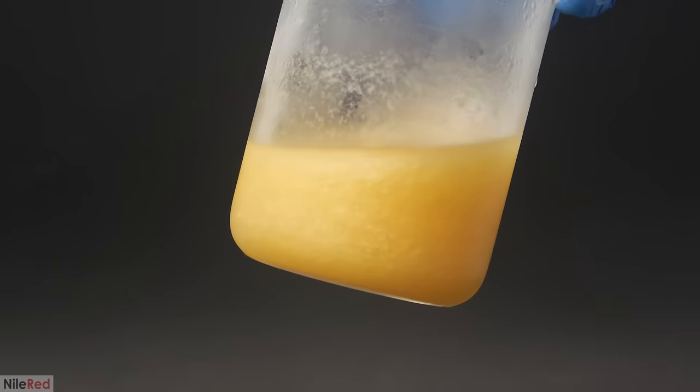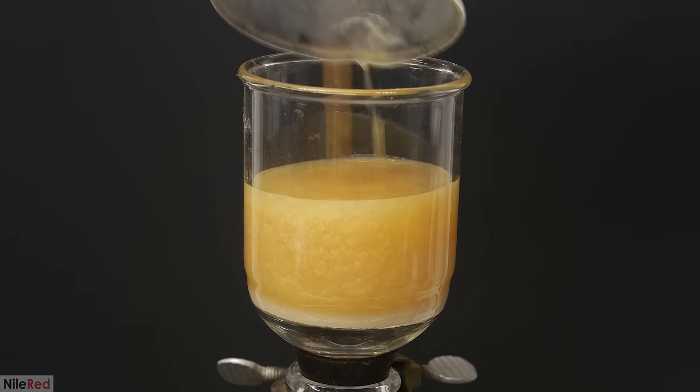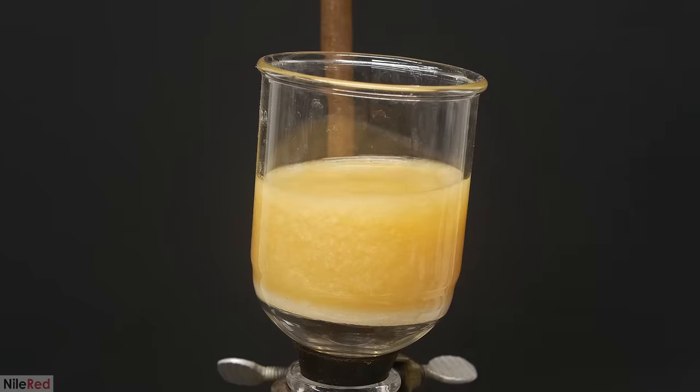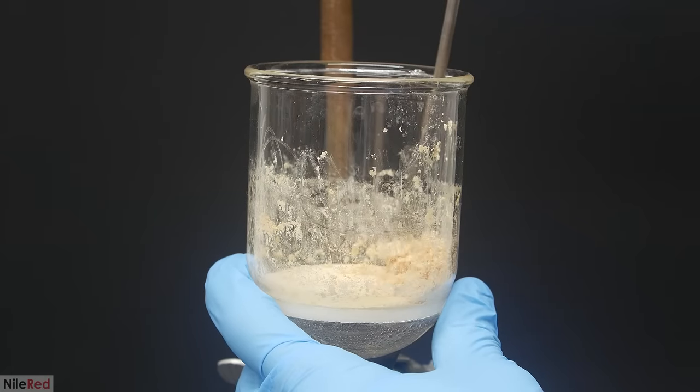Then I put the whole mixture in the freezer for a couple hours. To separate off the phenytoin, I added it to my vacuum filter and pulled away the liquid. I washed it with some ice cold water to get rid of any acid that remained, and then I transferred it to a beaker.